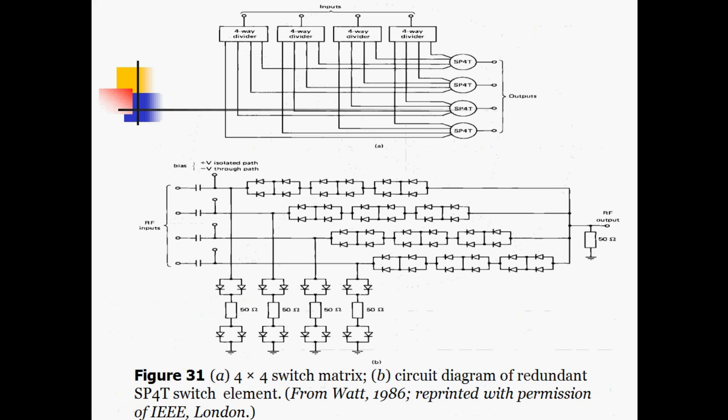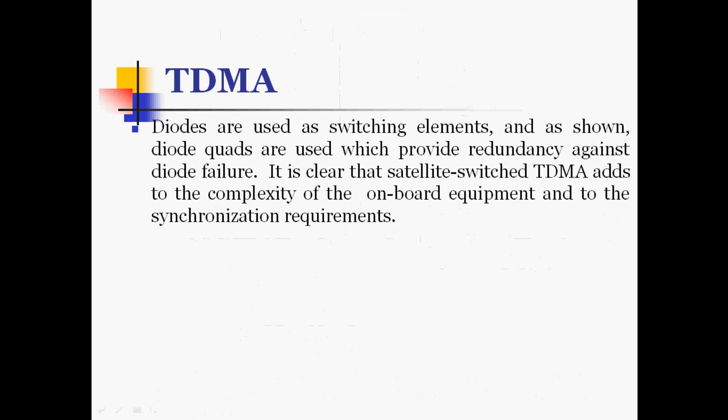The 4×4 switch matrix uses a redundant SP4T switch element, with RF input frames using diodes and capacitors. Four-way dividers are used for SP4T output — this is the circuit diagram of the redundant SP4T output switch element. Diodes are used as switching elements and diode quads are used, which provide redundancy against diode failure. If one diode fails, another takes its place. It is clear that satellite switched TDMA adds to the complexity of onboard equipment and synchronization requirements.